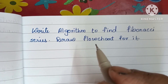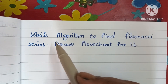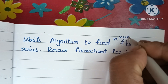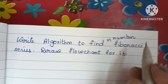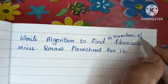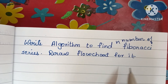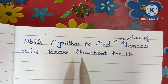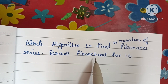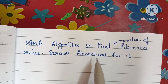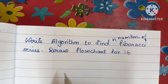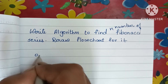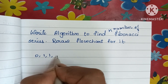In this video we are going to learn how to write an algorithm to find N numbers of the Fibonacci series and draw a flowchart for it. The Fibonacci series is a number series: zero, one, one, two, three, five, eight, and so on.